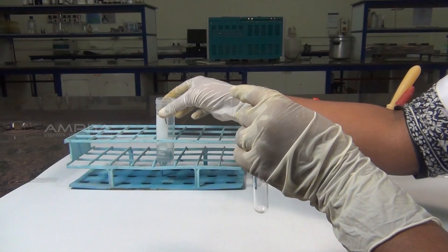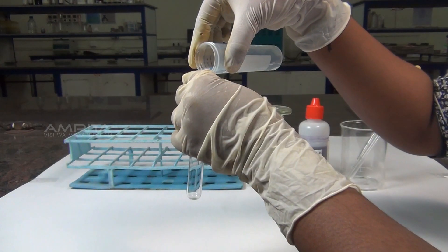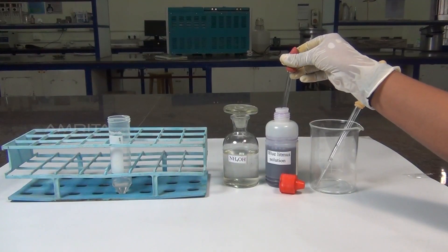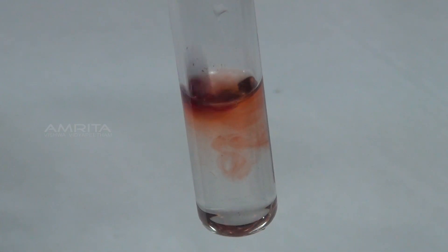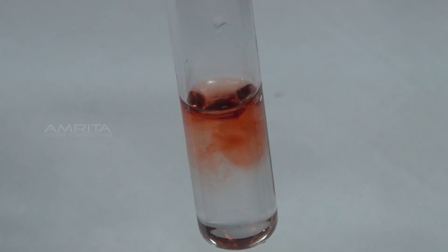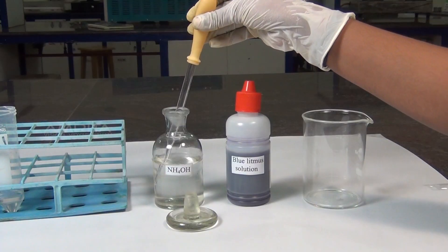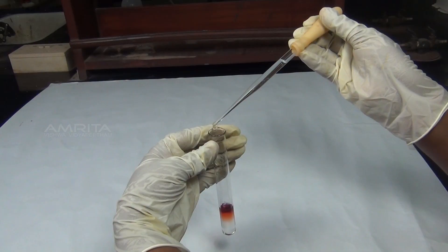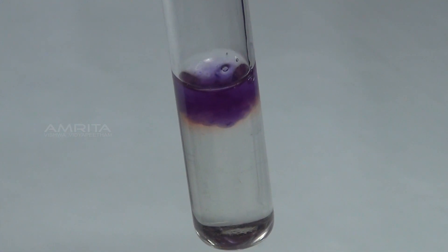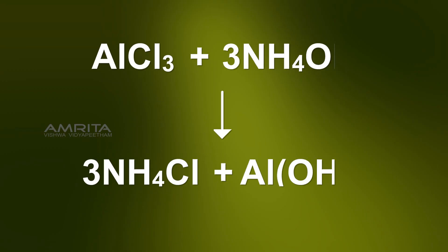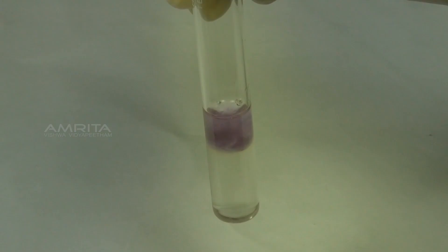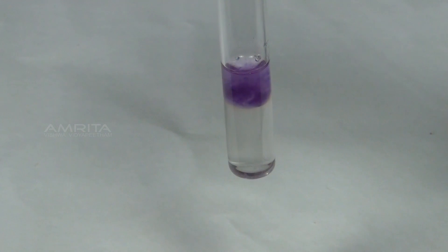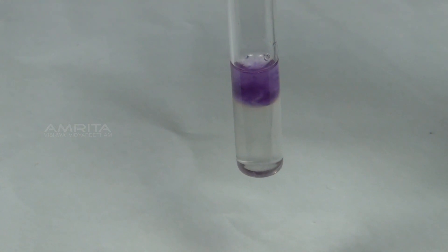Procedure: Take the solution obtained in the group analysis in a test tube. Using a dropper, add a few drops of blue litmus solution to the test tube. A red colouration is obtained due to the acidic nature of the solution. To this, add ammonium hydroxide drop wise till blue colour develops. Aluminium chloride present in the solution reacts with ammonium hydroxide to form aluminium hydroxide precipitate, which absorbs blue colour from the solution to form an insoluble complex.